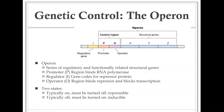The operator is a region where a repressor protein can bind. Think of the whole stretch of DNA as railroad tracks, with RNA polymerase as the train. The operator is where we can place a big clamp on the tracks so the train can't move past it. If RNA polymerase is physically blocked by a repressor bound to the operator, it can never reach the genes to transcribe them.